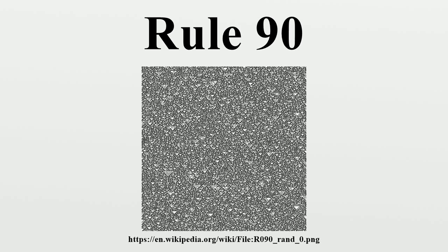All cells obey the same rule, which may be given either as a formula or as a rule table that specifies the new value for each possible combination of neighboring values. In the case of Rule 90, each cell's new value is the exclusive or of the two neighboring values. Equivalently, the next state of this particular automaton is governed by the following rule table.